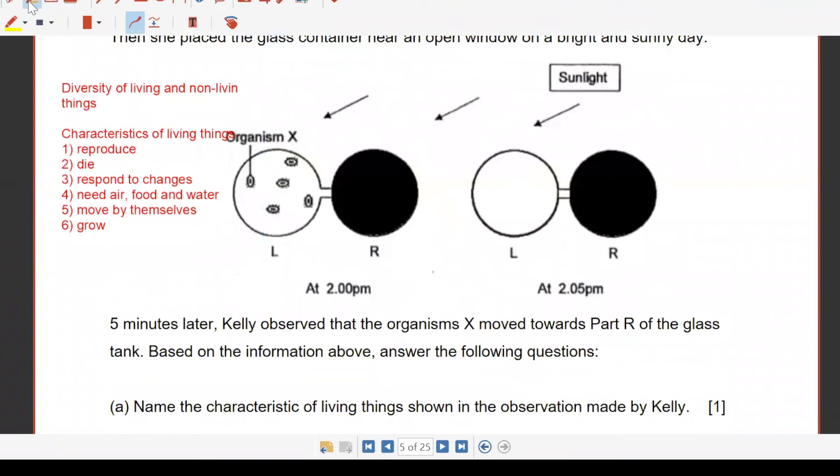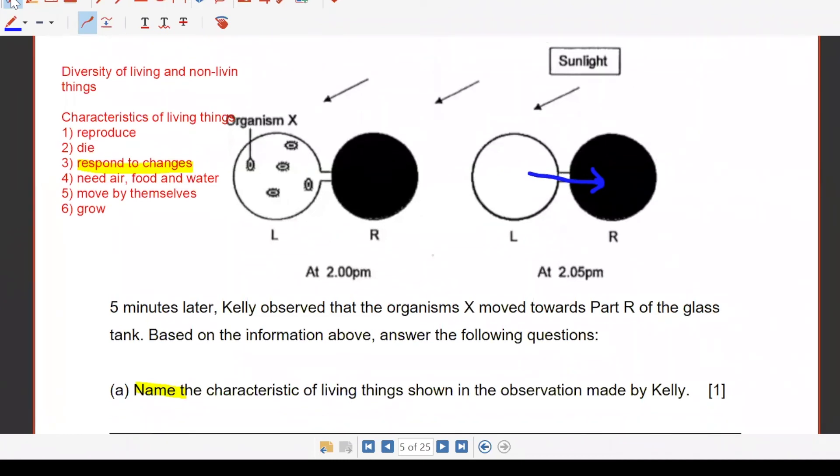Name the characteristics based on the observation. Just choose whatever you need to put inside. At 2:00 PM, Organism X is here. At 2:05 PM, Organism X disappears. Where did Organism X go? Name the characteristics. It went into the darkness at R. The reason why you cannot say they move by themselves is because this one is not testing for movement. This one is testing for whether it will respond to changes. Because the surrounding changes, that's why they change. That's why they move. So the answer is living things respond to changes to their surroundings.